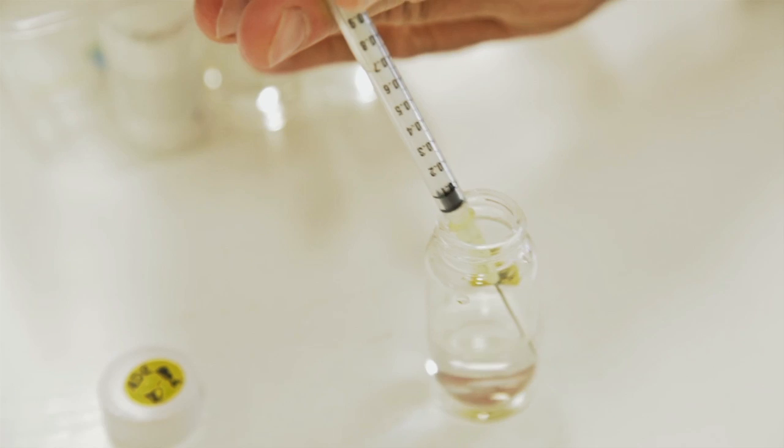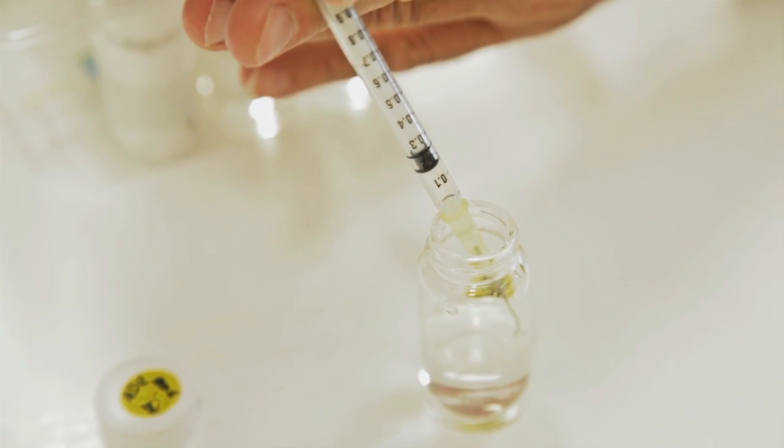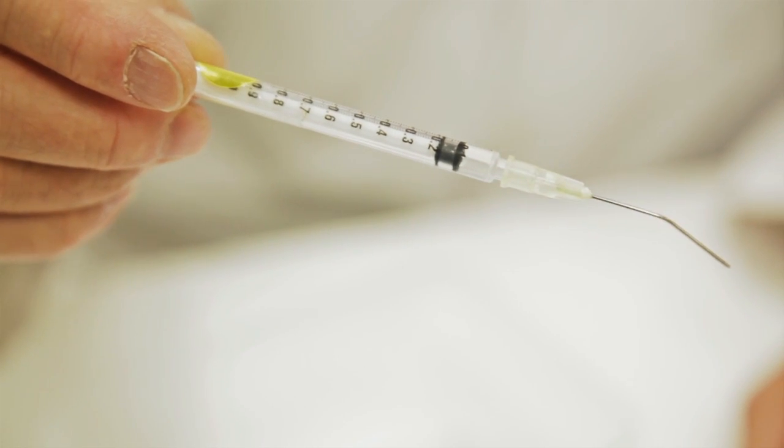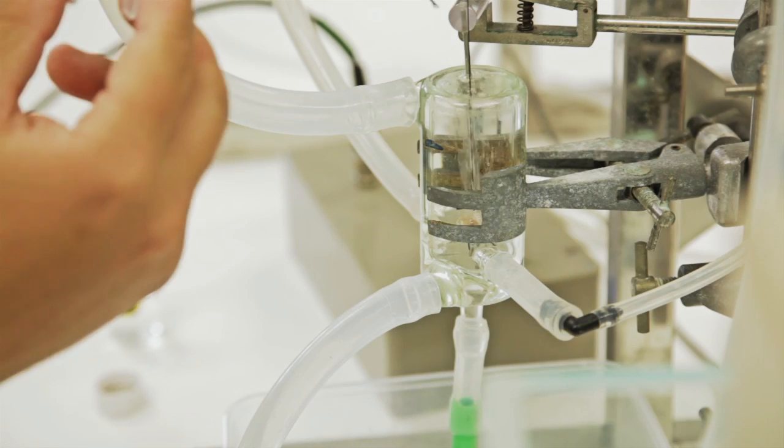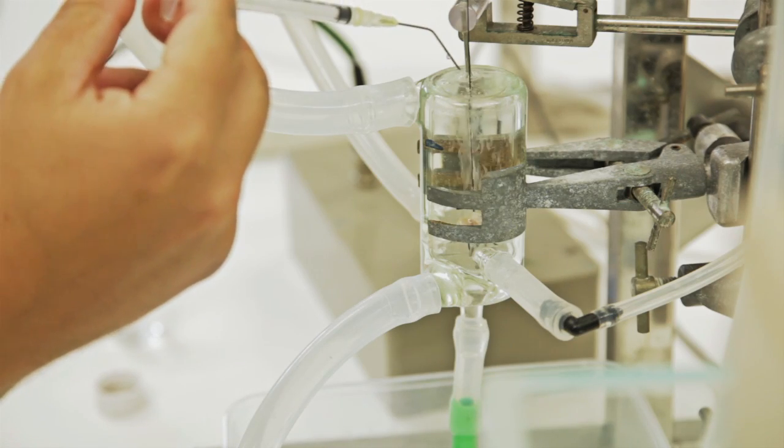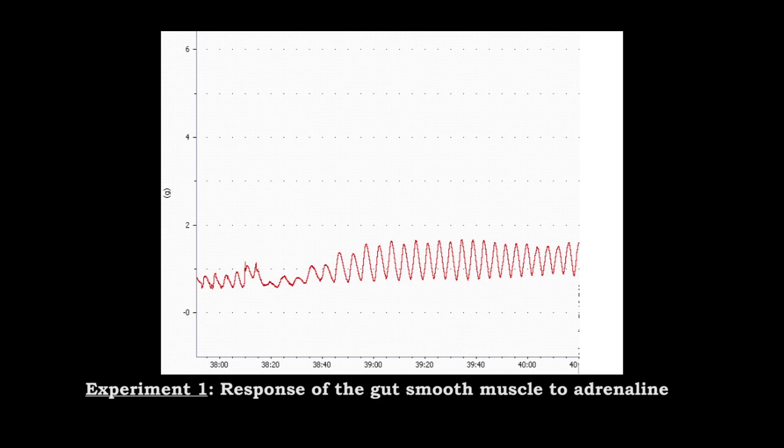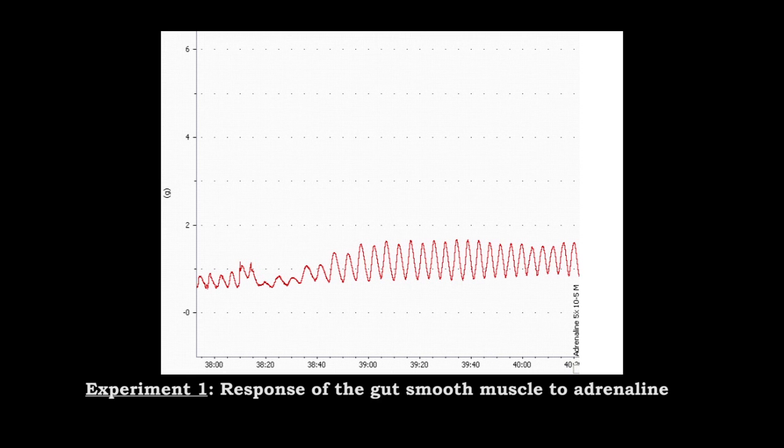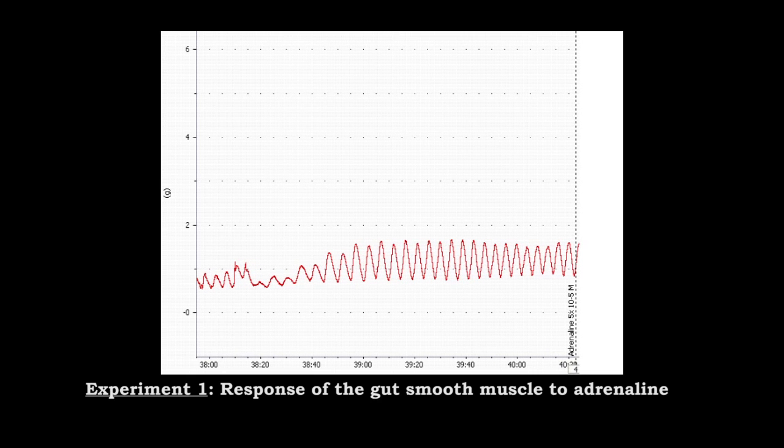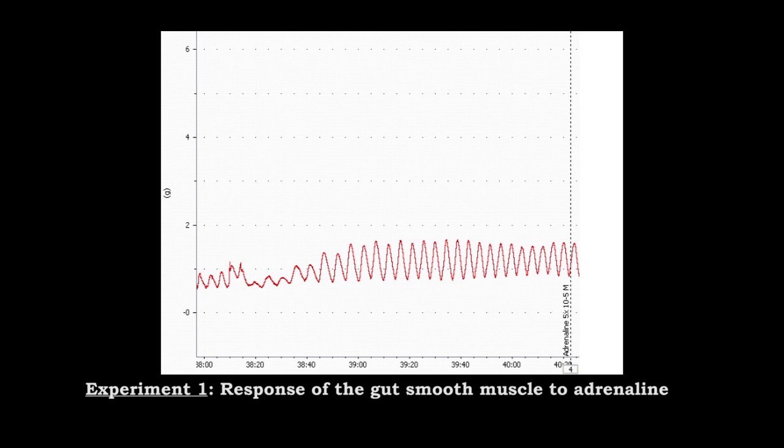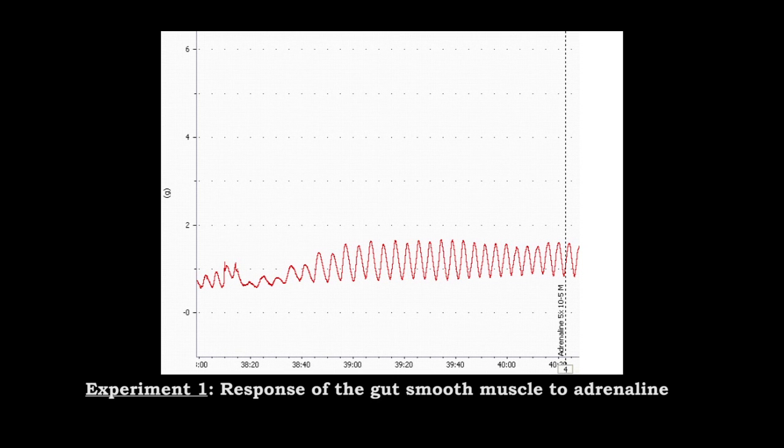Using a syringe with needle attached a five millimolar adrenaline solution is added to the organ bath which has a volume of 25 milliliters. This is the result of the transducer. Observe the absolute change in grams in basal tone, amplitude of spontaneous contraction, and total tension of the smooth muscle in response to adrenaline and tabulate.